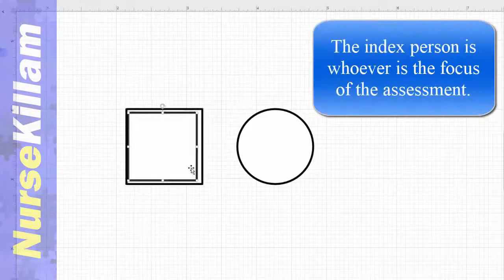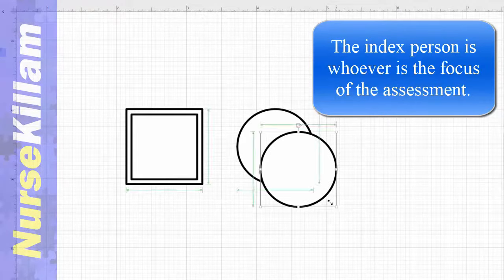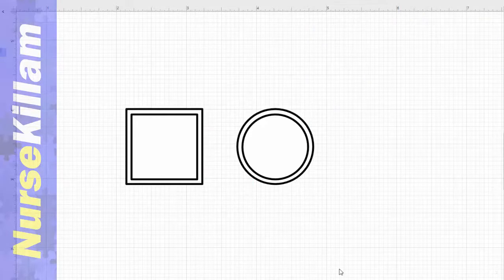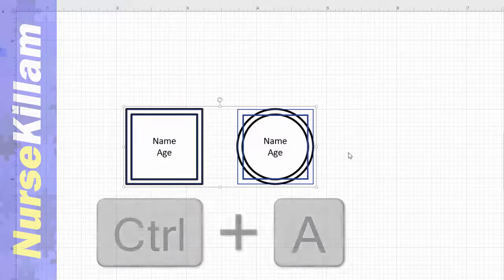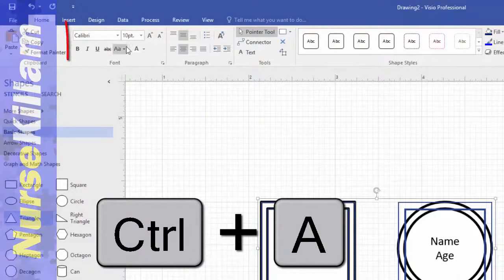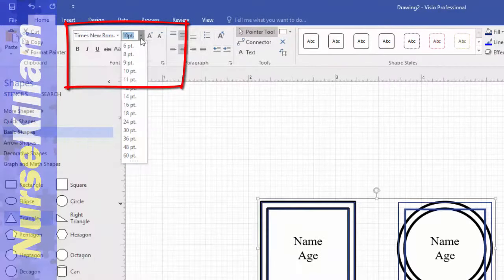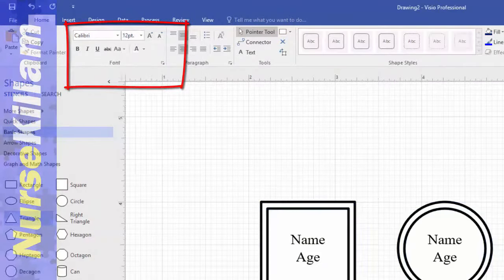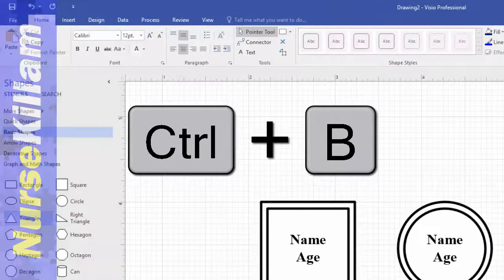To build the symbol for the index person, copy and paste a second shape, adjusting it to be slightly smaller and overlay it on the index person. All shapes need a name and age. To add their name and age, simply click on the shape you created and start typing. I recommend changing the font. Use Ctrl A to select all the shapes, then adjust the font in the font section of the Home tab. Since I like APA, I favor Times New Roman. I also find that fonts show up better in the final product if they are bolded. Use Ctrl B to easily bold.